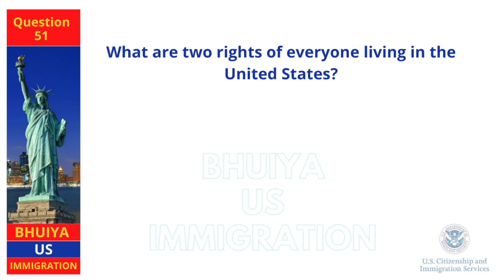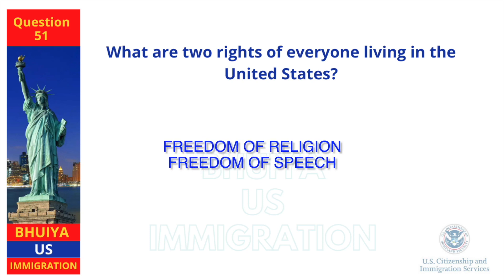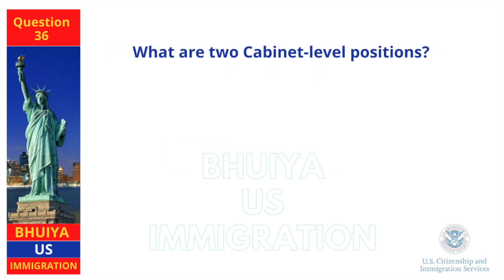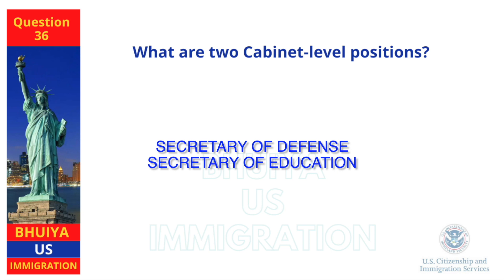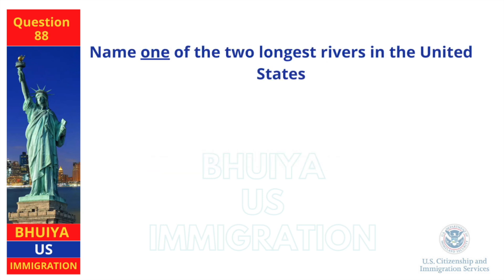What are two rights of everyone living in the United States? Freedom of religion, freedom of speech. What are two cabinet-level positions? Secretary of Defense, Secretary of Education. Name one of the two longest rivers in the United States. Missouri River.